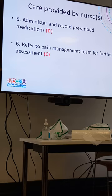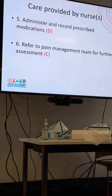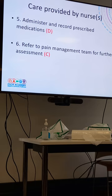Number five is 'administer and record prescribed medications.' You can have the same entry on both care plans, but if possible, be specific per problem. For pain, write 'administer prescribed analgesia and record on the MAR chart.' For malnutrition, write 'administer prescribed health supplements.' For sleep problems, write 'administer prescribed medications.' As much as possible, if you can make it unique per problem, that would be really helpful for your evaluation.